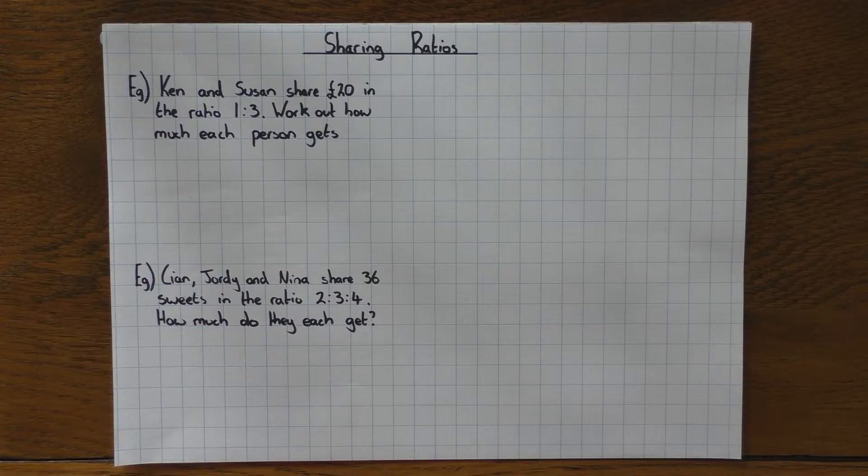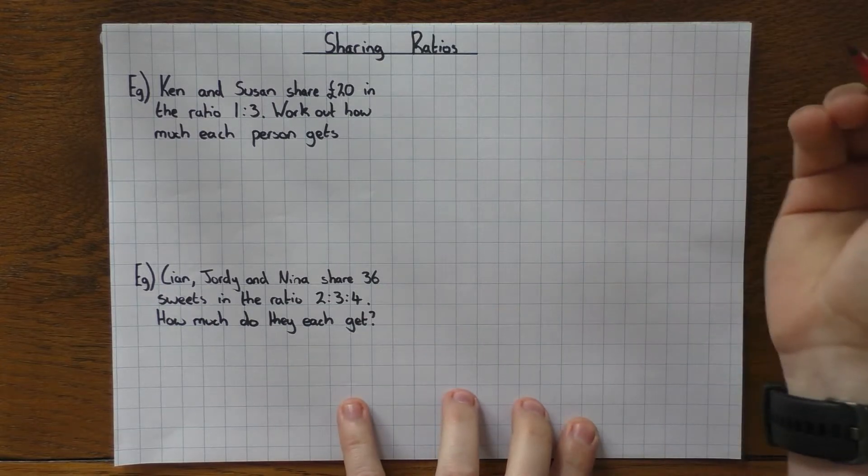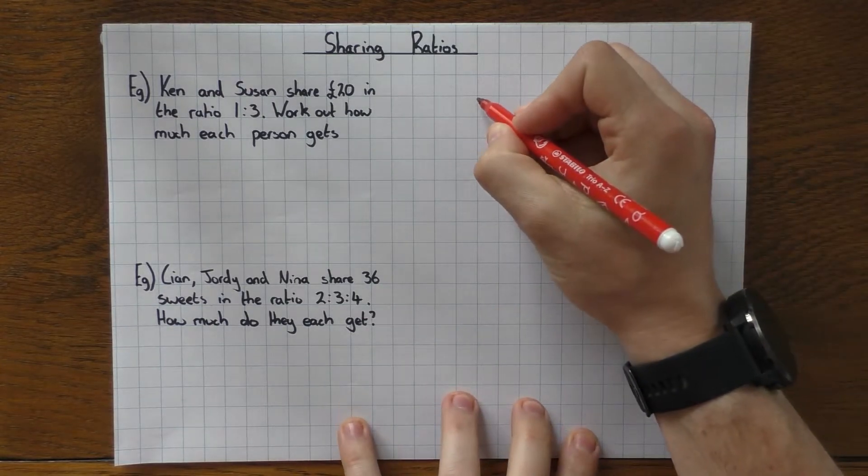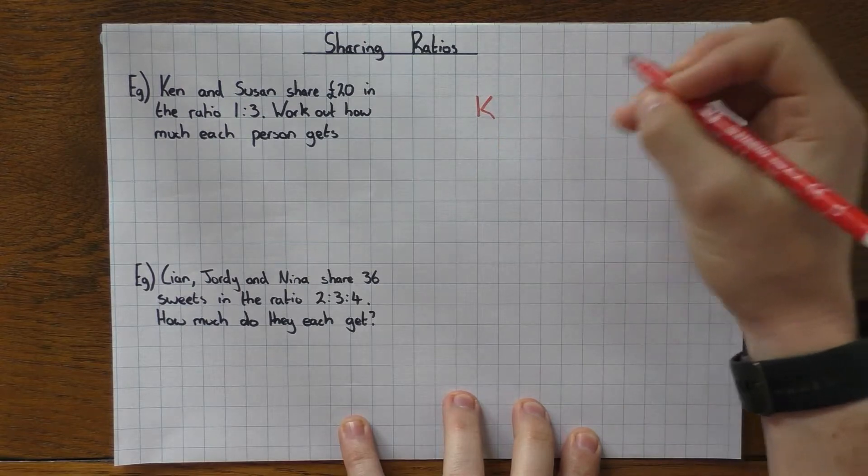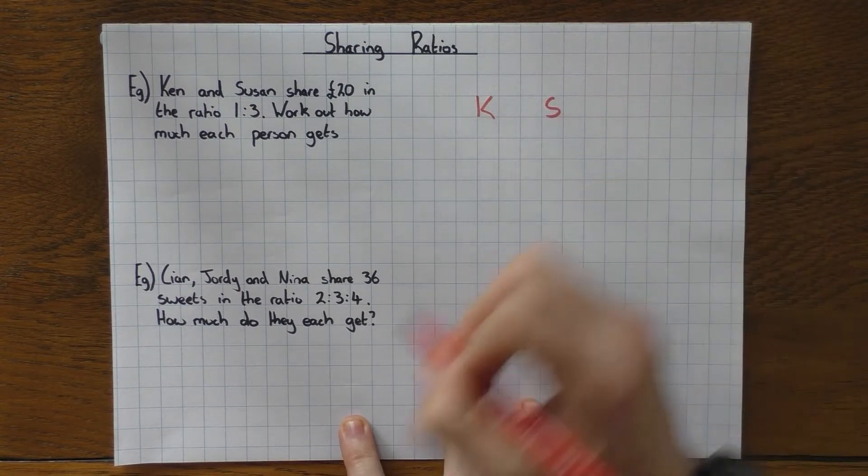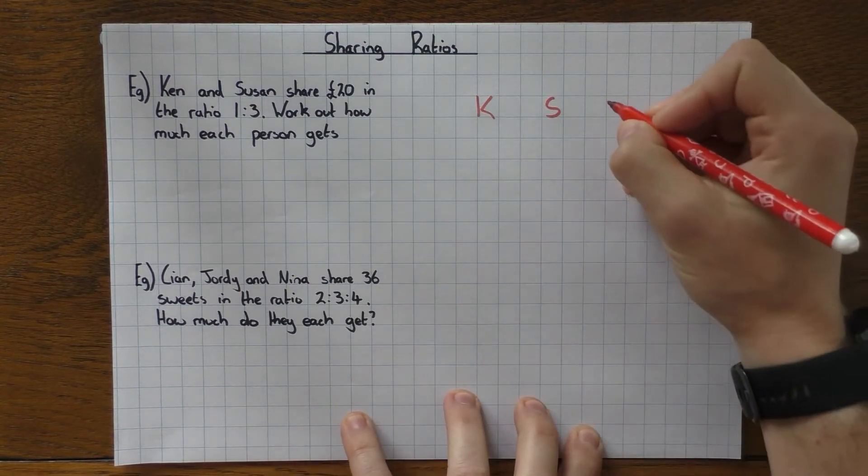Let me explain what I mean with the first example here. We've got Ken and Susan share £20 in the ratio of 1 to 3. Work out how much each person gets. Like I said, I'm going to put it into a table, so I'm going to write K for Ken and S for Susan, and with a table I want you to always write down the total.